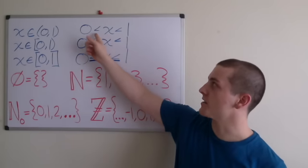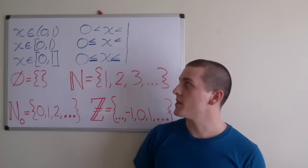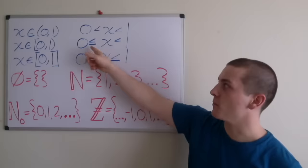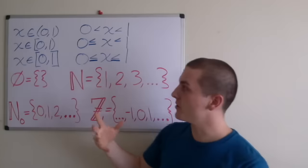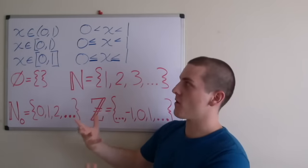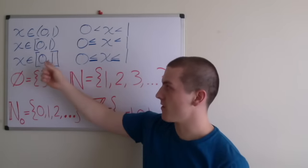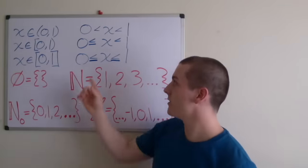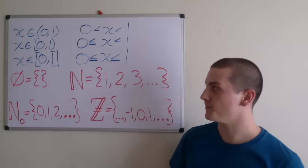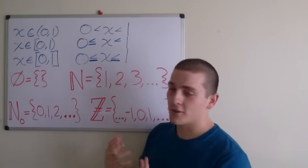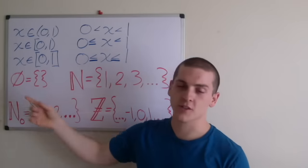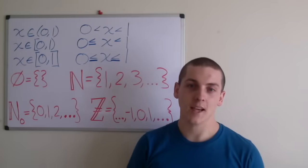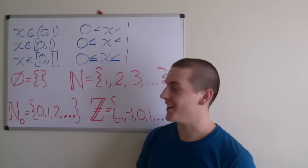Likewise, if we wanted to say that x is greater than or equal to 0 and x is less than 1, then we have to switch this to a square bracket — all we're doing is including the number 0 in the interval. Also, we can include both 0 and 1 in the interval by using square brackets on both sides, so it's greater than or equal to and less than or equal to. And now I'll talk about some common sets, the first one being the null set, which is the same thing as the empty set — there are no elements contained within the set.